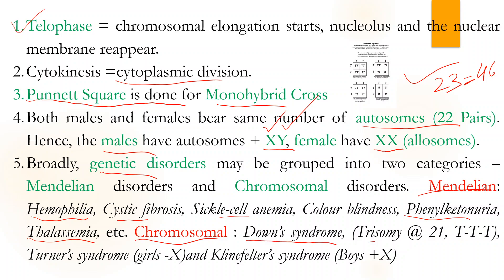For chromosomal disorders, Down syndrome — the 21st pair has trisomy, meaning normally a pair should have 2 chromosomes but here there are 3. Turner syndrome: in girls, one X chromosome is missing, so instead of 2 they have only 1. Klinefelter syndrome: in boys, there is an extra X chromosome, making it XXY — this is a chromosomal disorder.